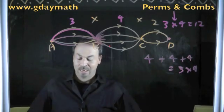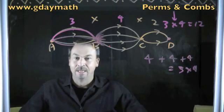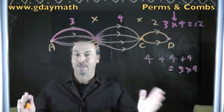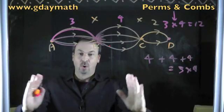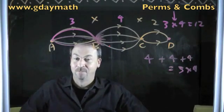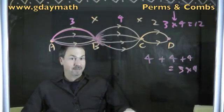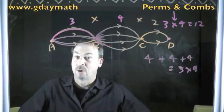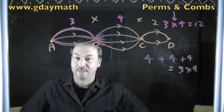So that's the multiplication principle. If there are A ways to do one task and B ways to do a second task, then there's A times B ways to complete both tasks together, assuming that those choices don't interact with each other. For example, suppose I told you I would never wear my purple shirt with my pink trousers. Then I know my multiplication principle is going to break down. So assuming there's no interaction between the choices,